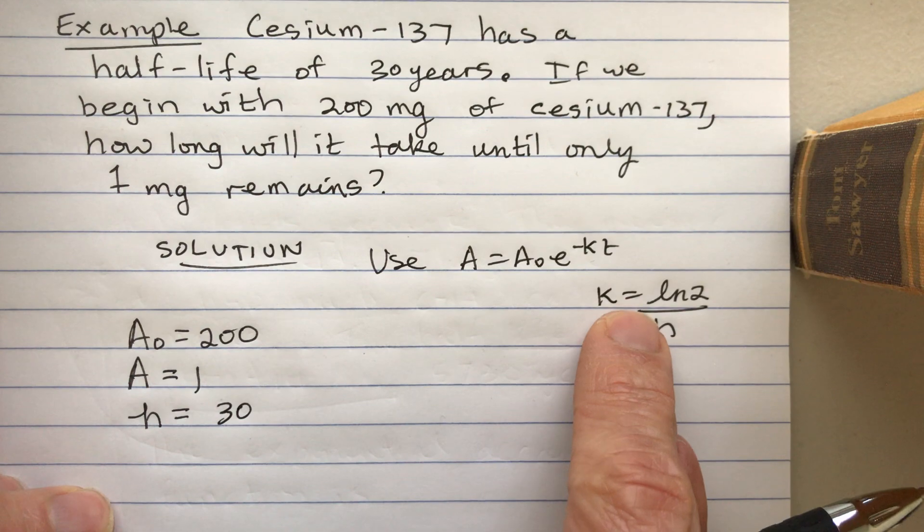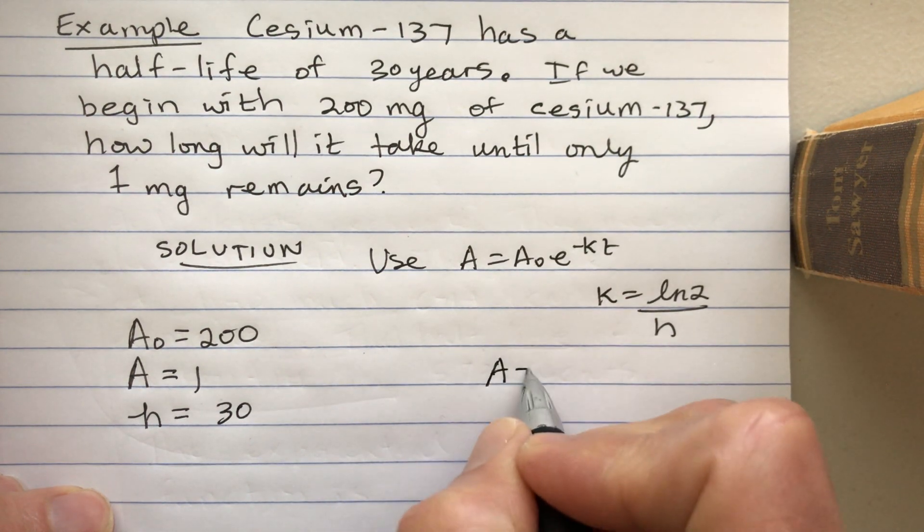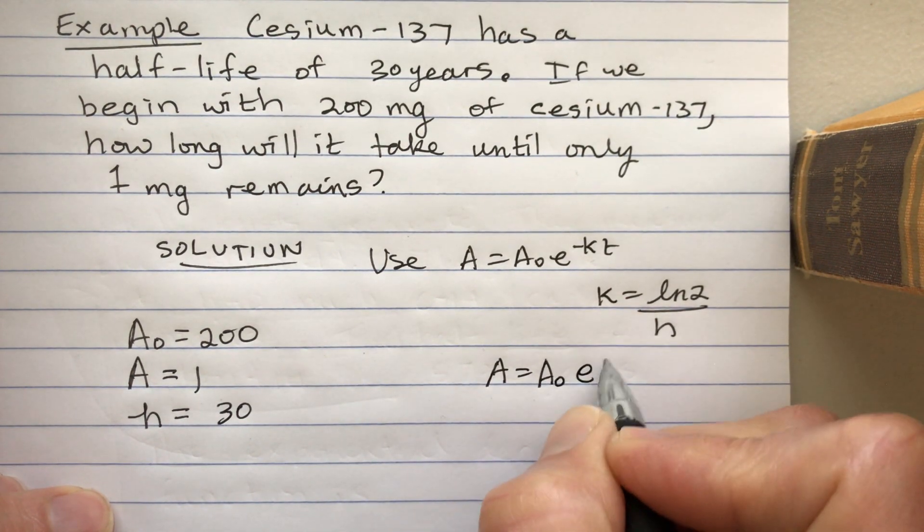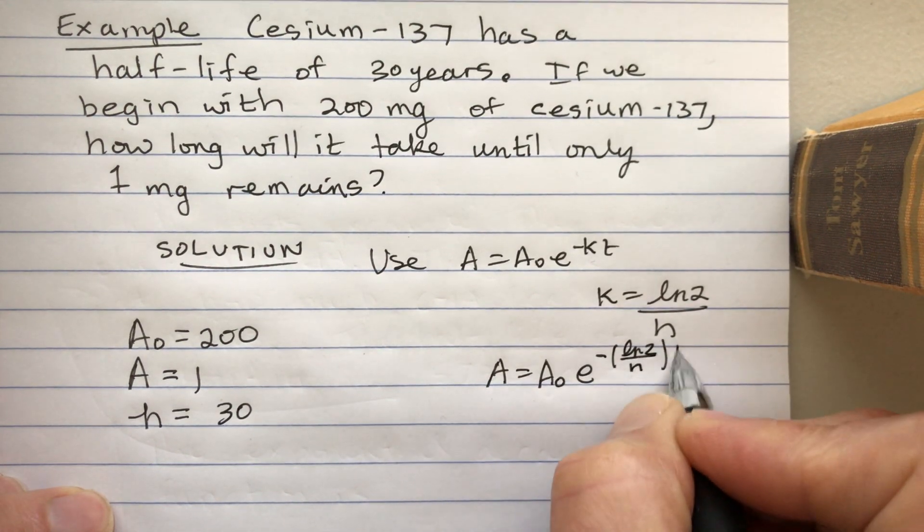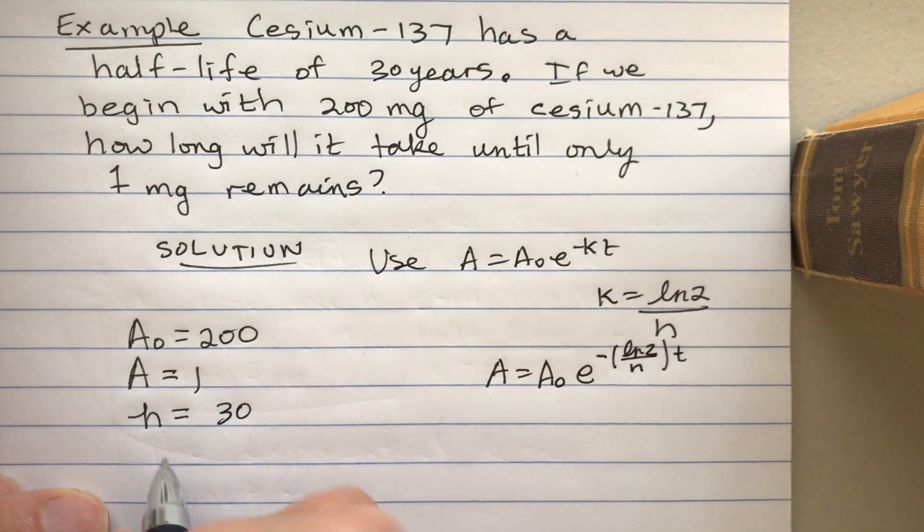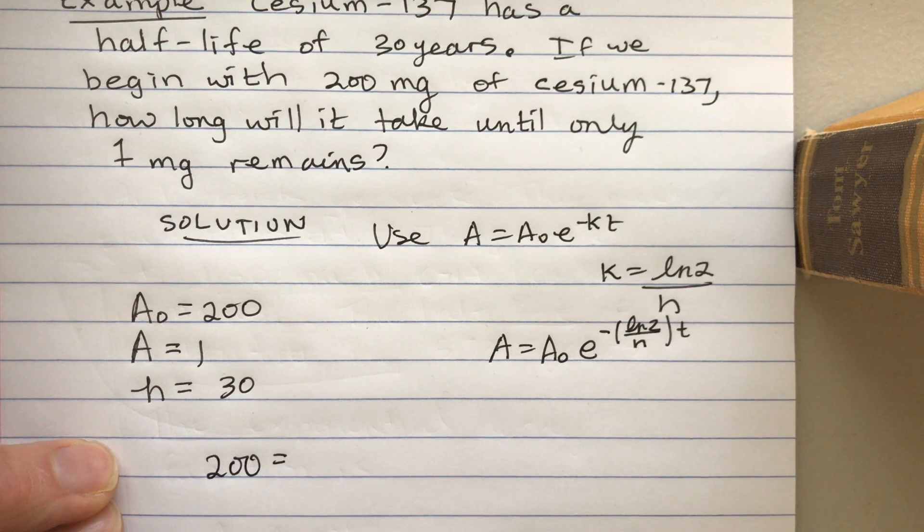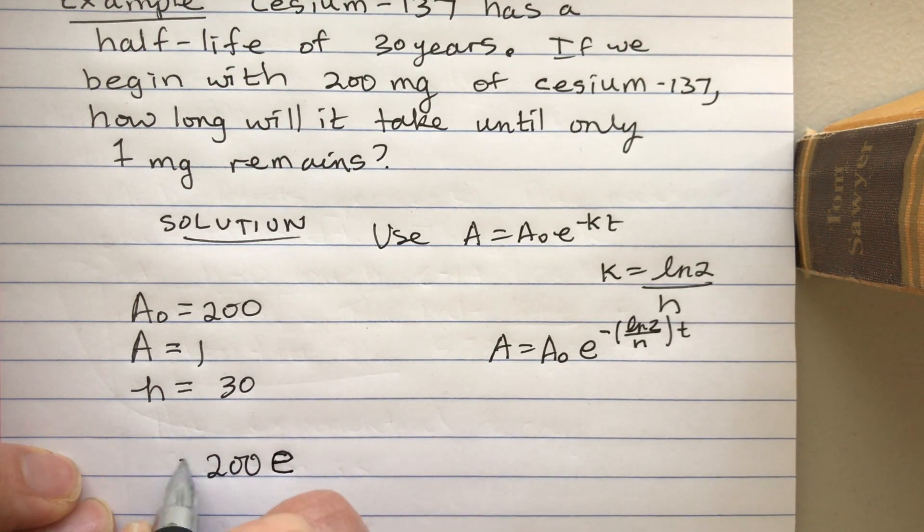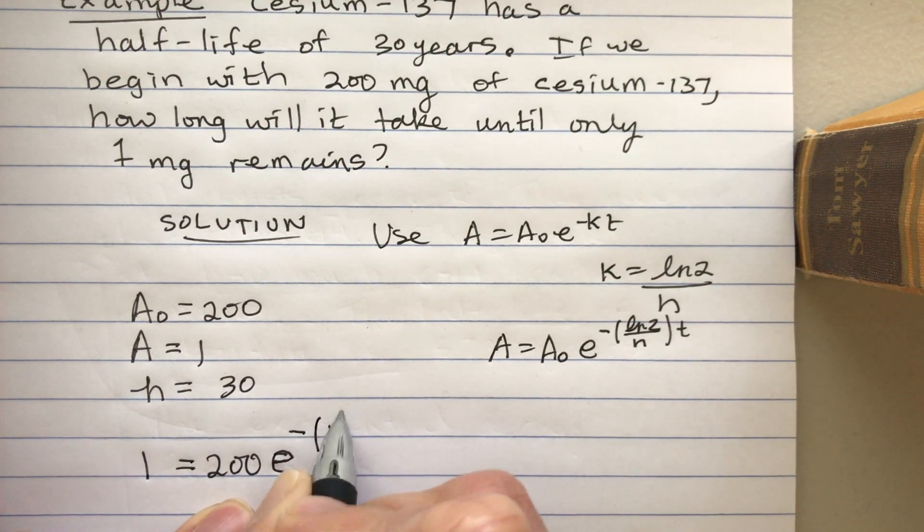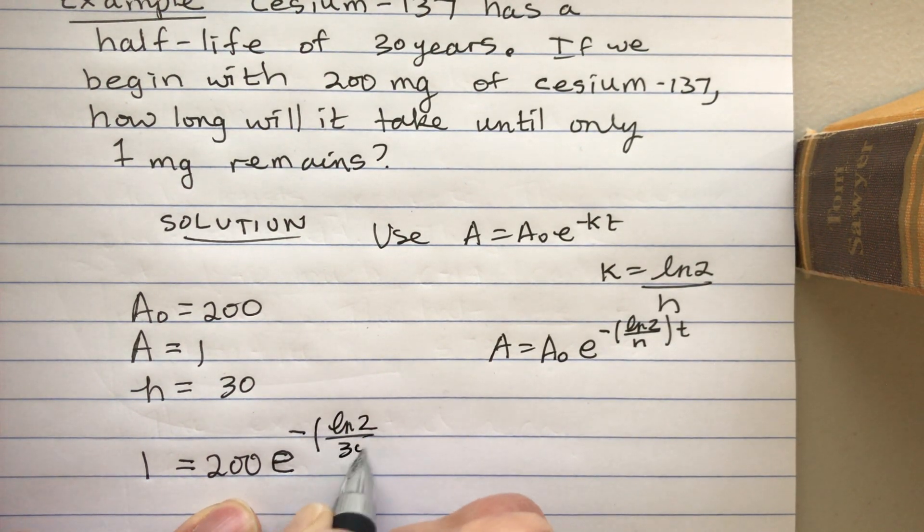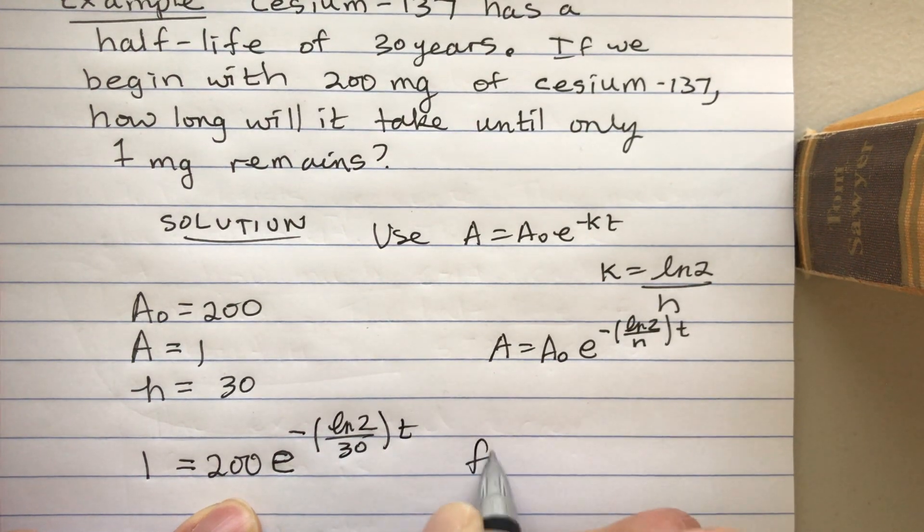Let's see. Let's put this together. Okay, if I put the k in there, that's what I get. So therefore I'm going to get 1 = 200e^(-(ln2/30)t) and then we're going to find t.